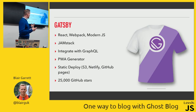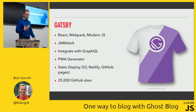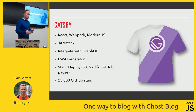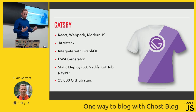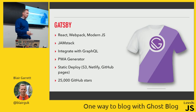With JAMstack, the A stands for APIs — these can be any custom-built or third-party services accessed over HTTP using JavaScript. The M stands for Markup — you pre-build your static sites at deploy time using templates. These sites aren't tied to any backend language like Java, Ruby, or .NET.